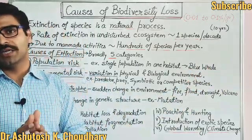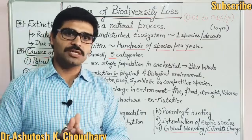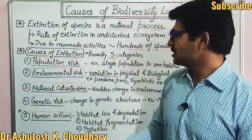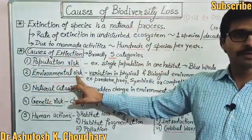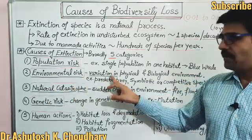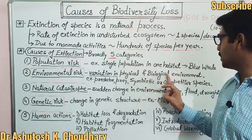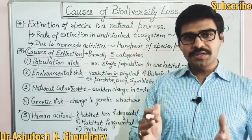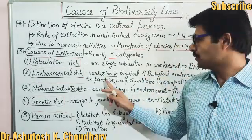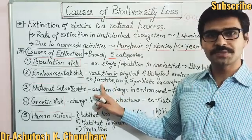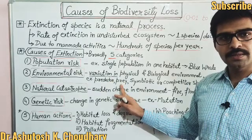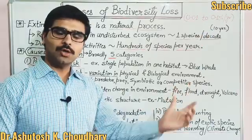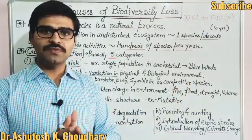For example, population risk is generally observed in blue whales because blue whales occupy a habitat predominantly and no other species generally coexist with blue whales. The second category is environmental risk. Environmental risk is the variation in the physical and biological environment — meaning the relationships between different species, such as predator-prey relationships, symbiotic relationships, or competition between species, which may be interspecific.